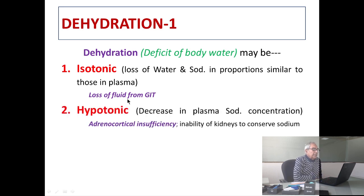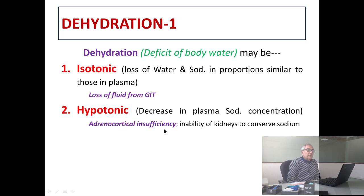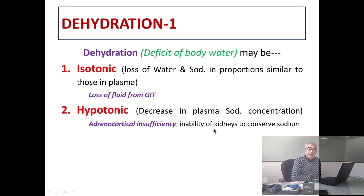In hypotonic dehydration there is decrease in plasma sodium concentration, that is we lose more sodium compared to what we find in plasma. For example, in adrenocortical insufficiency, the kidneys are unable to conserve sodium, so sodium is lost and potassium is retained by the kidneys, resulting in hypotonic dehydration.